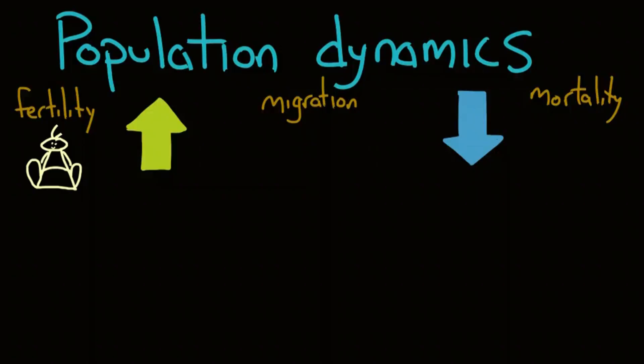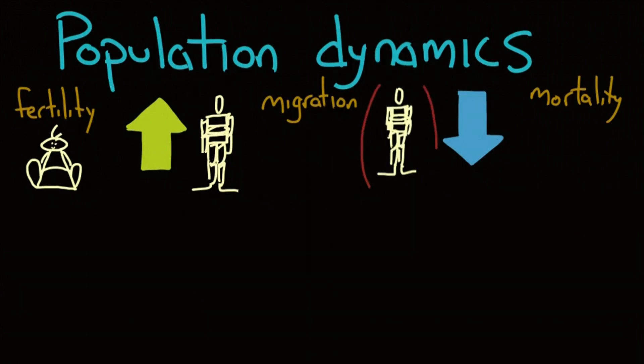Migration consists of two factors: immigration, where people move into a country to permanently make it their home, which adds to the total population, and emigration, where people move out of a country to make somewhere else their permanent home, which decreases the population. Last is mortality, which measures the rate at which people are dying in a population. In case you were wondering, deaths decrease the population. People migrate for a number of reasons. Some people are seeking refuge, others are seeking work, others still just want to live in a different country.